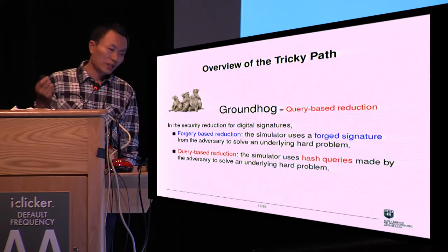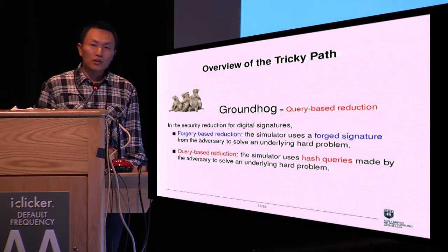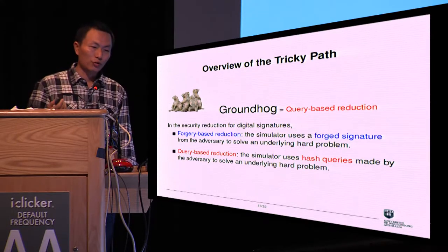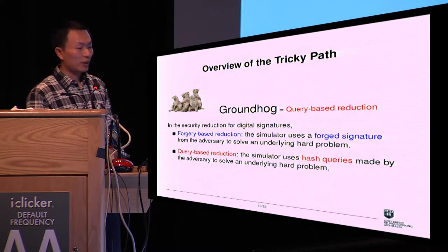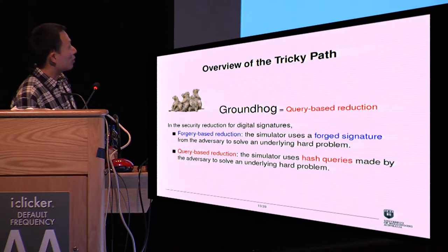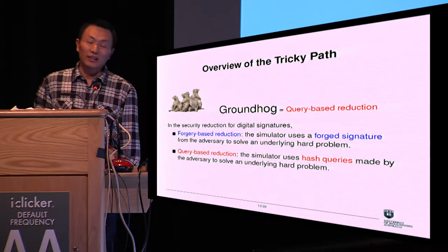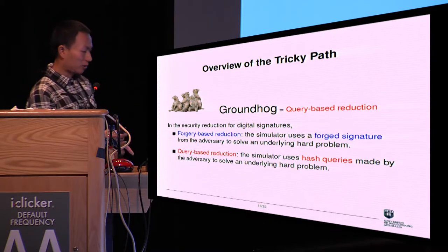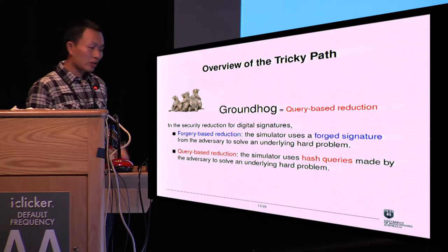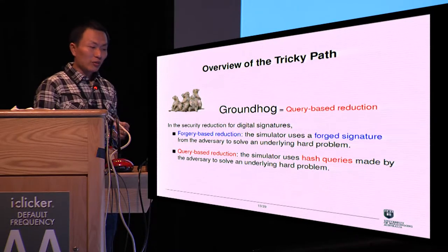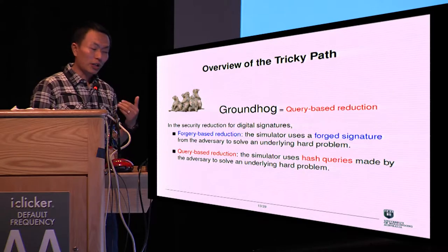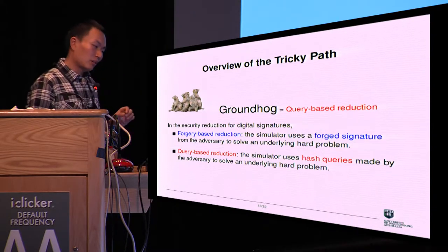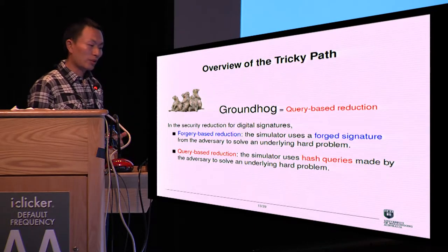In the traditional security reduction for digital signatures, the simulator uses a forged signature made by the adversary to solve an underlying hard problem. The only difference in our approach is the way of solving the underlying hard problem — the first approach is forge-based reduction, and ours is query-based reduction. Query-based reduction is not completely new because it has already been used to prove security for encryption schemes in the indistinguishable security model under computational hardness assumptions, but I cannot find any work that uses this kind of query-based reduction for digital signatures.